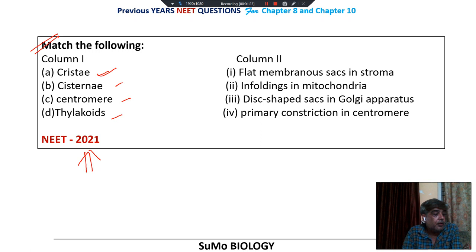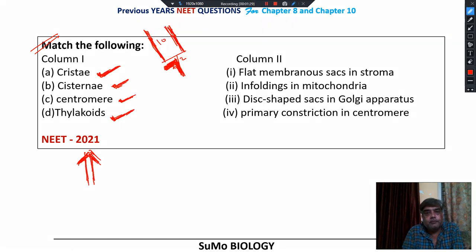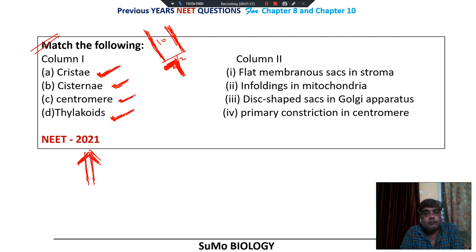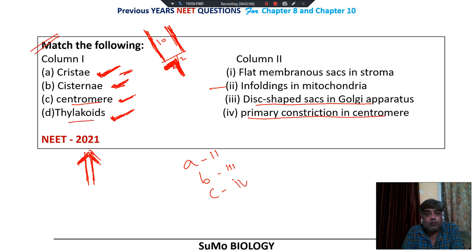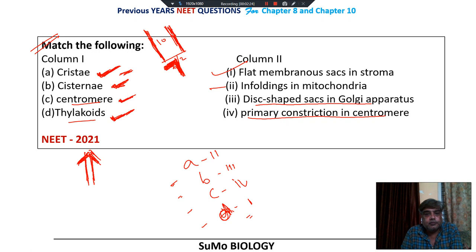Cristae are the infoldings of mitochondria, so A goes with 2. Cisternae are disc-shaped structures of the Golgi body, so B goes with 3. Centromere is the primary constriction, so C goes with 4. Thylakoids are flat membranous sacs present in the stroma of chloroplasts and produce grana, so D goes with 1. The correct match is A2, B3, C4, D1.